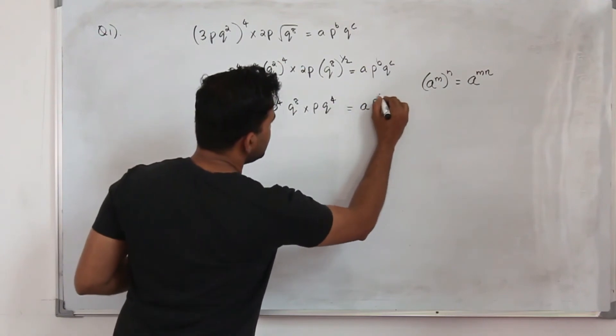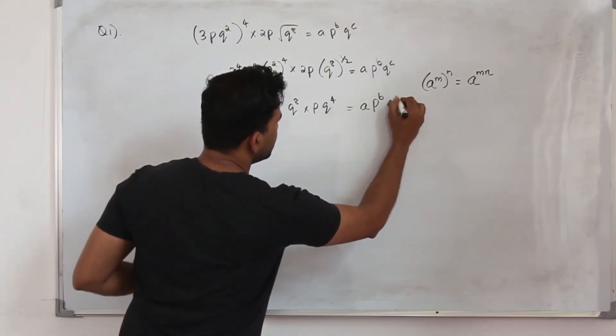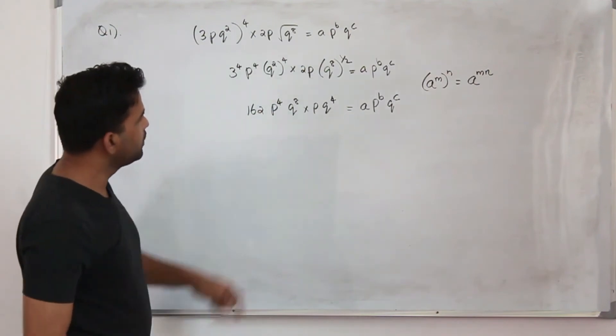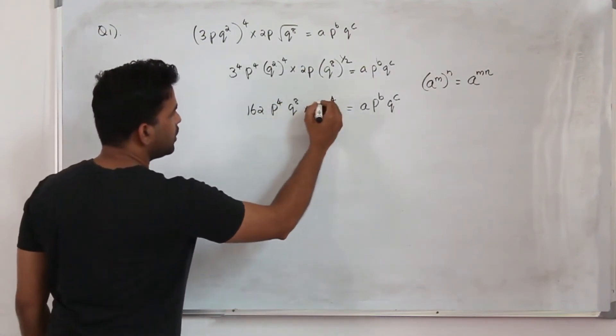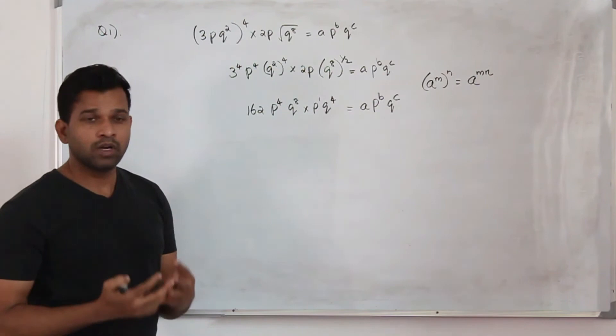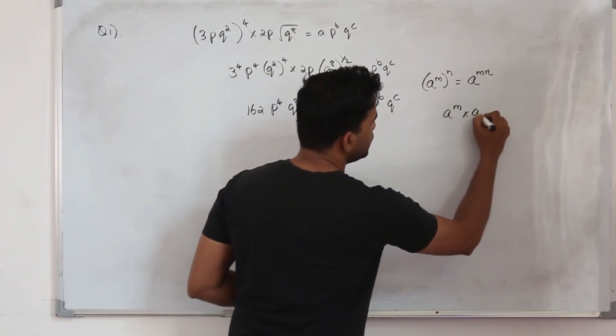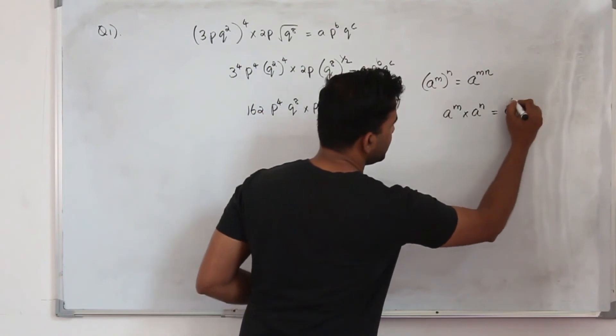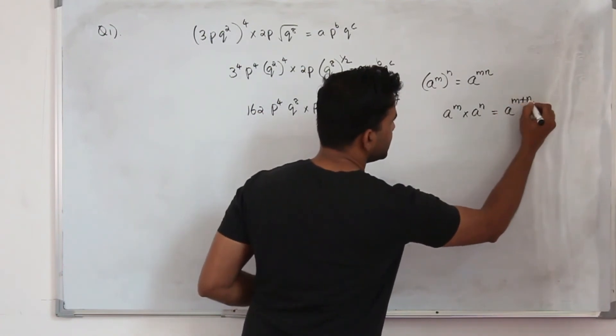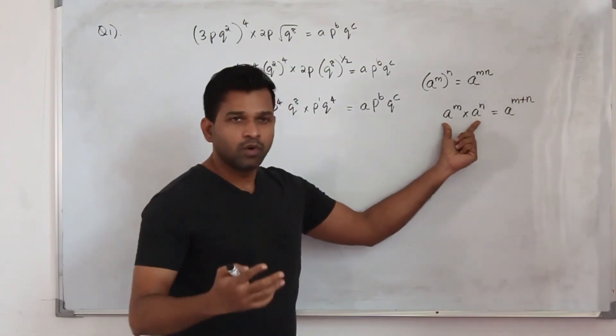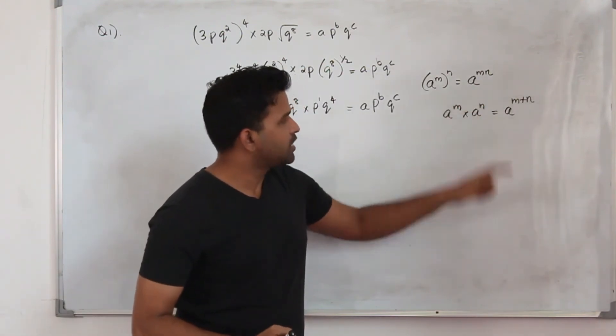Now if you simplify further, we have p⁴ and p¹. Our laws of indices says if you have a^m times a^n, you can write it as a^(m+n). If the two bases are equal, you can just add the exponents.